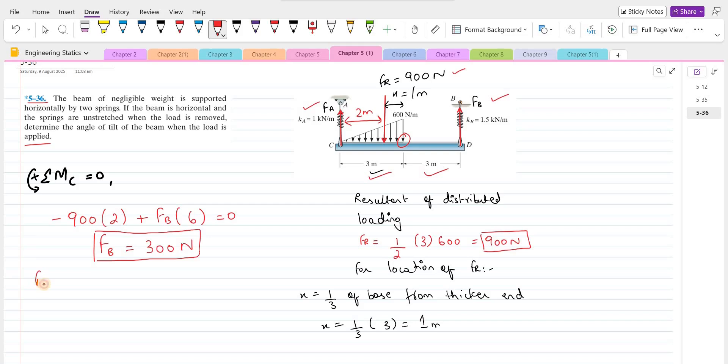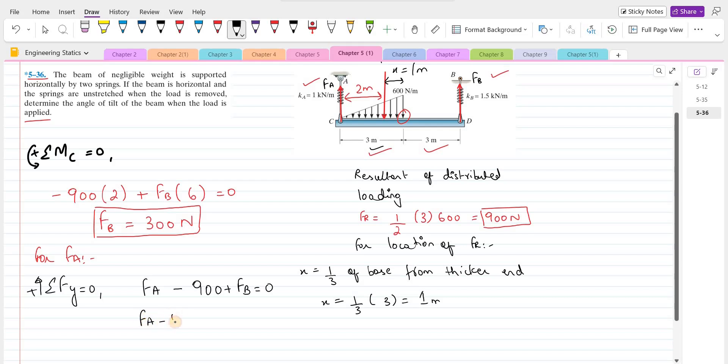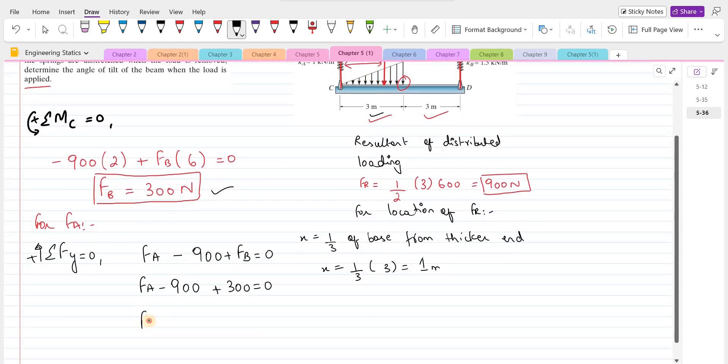Now for the force F A, we can do summation of forces in y direction equals to 0. I am considering up direction as positive. So we have F A minus 900 plus F B, F B is 300 Newtons equals to 0. So force F A comes out to be 600 Newtons.